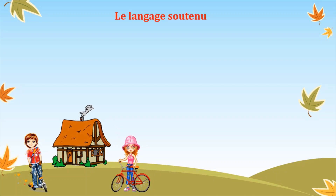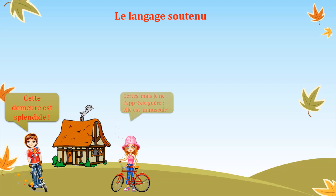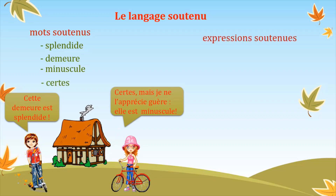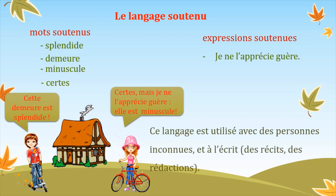Voyons maintenant le langage soutenu, et toujours avec la même situation : « Cette demeure est splendide. — Certes, mais je ne l'apprécie guère. Elle est minuscule. » Comme vous voyez, on a utilisé les mots soutenus : splendide, demeure, minuscule, certes. Et comme expression soutenue : je ne l'apprécie guère. Ce langage est utilisé avec des personnes inconnues et à l'écrit, quand on écrit des récits ou des rédactions.